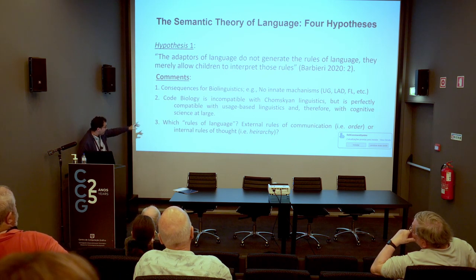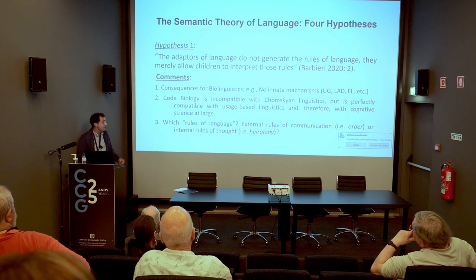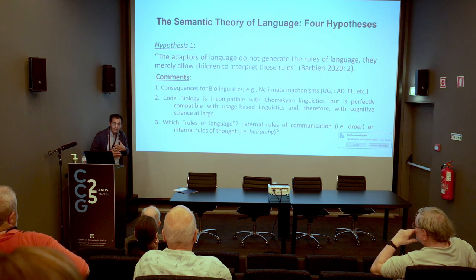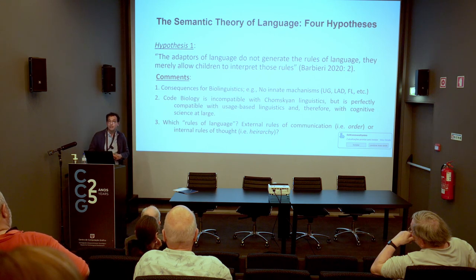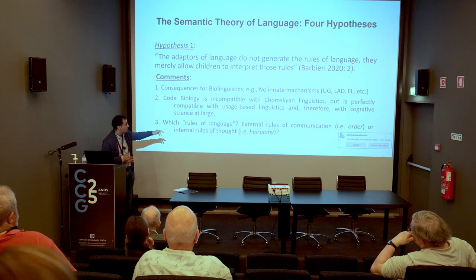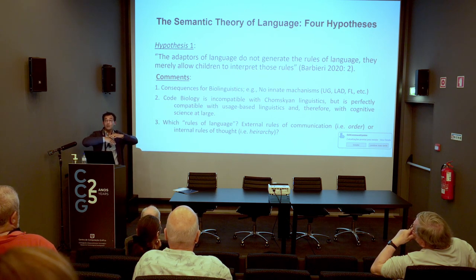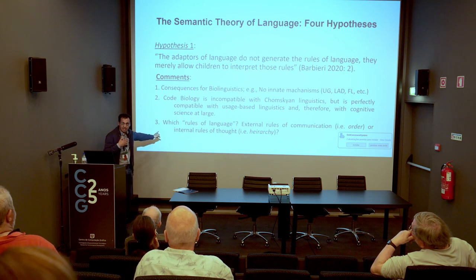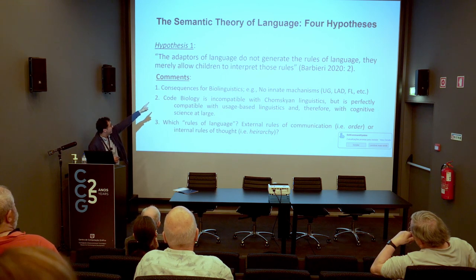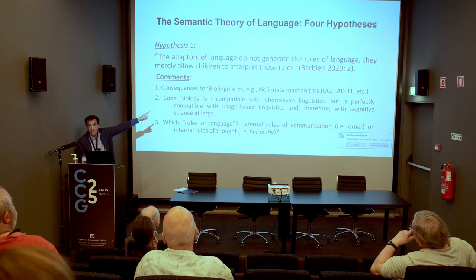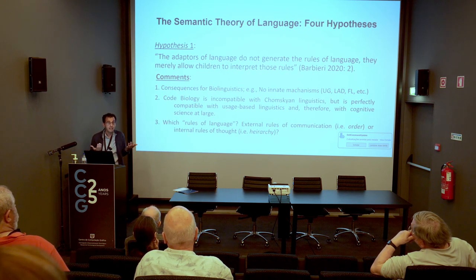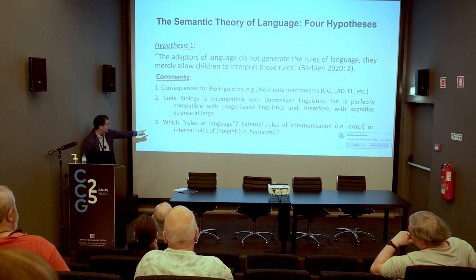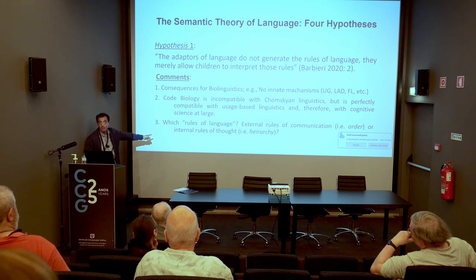However, code biology is perfectly compatible with usage-based linguistics — like Tomasello and others — where assumptions are in agreement with what I read in Barbieri's work. So even if it's incompatible with Chomskyan biolinguistics, it doesn't mean incompatible with biolinguistics in general. One concern: which rules of language do we mean in this hypothesis? External rules of communication — order, word by word — or internal rules of thought, which involve hierarchy? As a linguist, I have to ask: which rules?